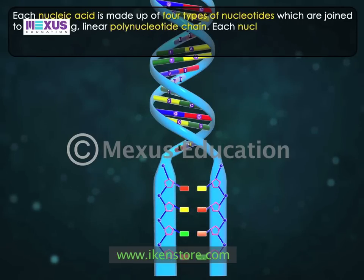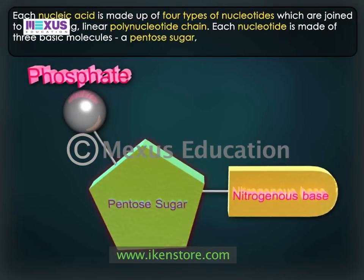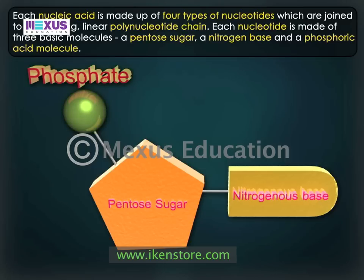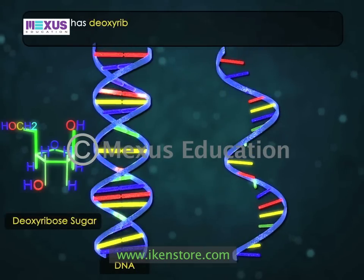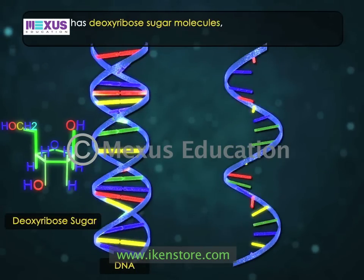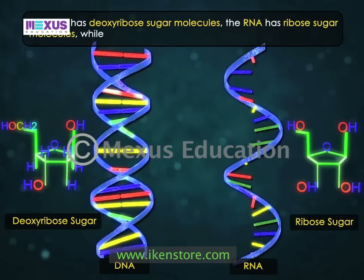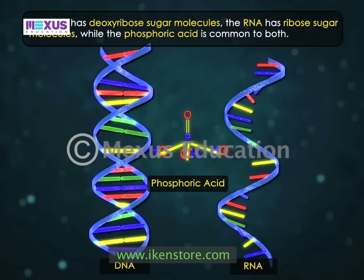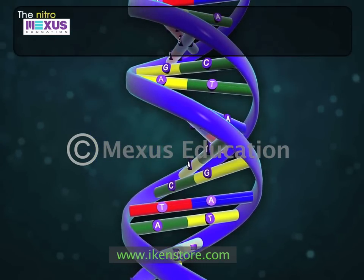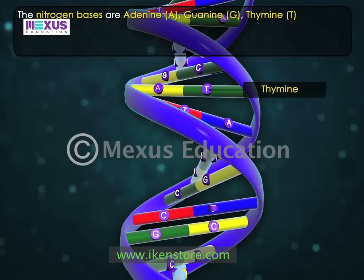Each nucleotide is made of three basic molecules: a pentose sugar, a nitrogen base and a phosphoric acid molecule. The DNA has deoxyribose sugar molecules, the RNA has ribose sugar molecules, while the phosphoric acid is common to both. The nitrogen bases are adenine, guanine, thymine and cytosine.